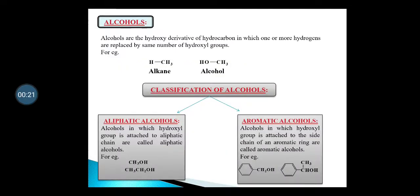First we will start with alcohols. As you have already studied alcohols in your class 12th, you must know what alcohols are. Alcohols are the hydroxy derivatives of hydrocarbons in which one or more hydrogens are replaced by the same number of hydroxyl groups. For example, if you take methane and replace one hydrogen with one hydroxyl group, that is the OH group, you will get methanol.